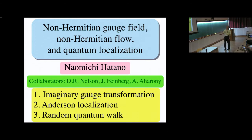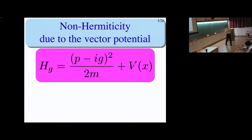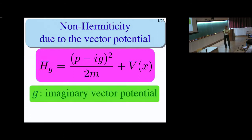The first part is basically a review of what I did 20 years ago, but I've added some new results at the end. The point of my talk is that when you try to introduce non-Hermiticity, you usually introduce a complex scalar potential. But here, my strategy is to introduce a complex vector potential.